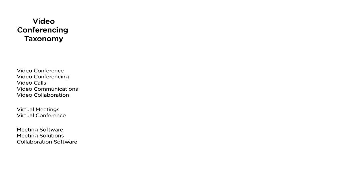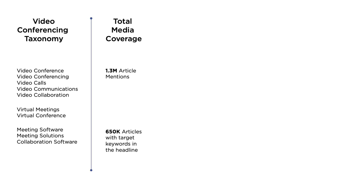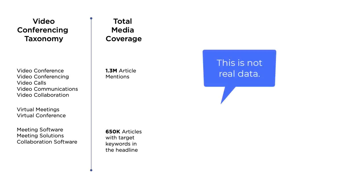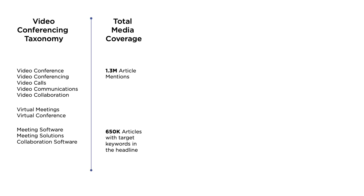I have two examples here. One where I'm pulling pure mentions — 1.3 million mentions of all of these keywords and phrases over the course of three months. Below that, I have 650,000 articles with target keywords in the headline — what I would call exclusive coverage. But this is coverage about the category of video conferencing, not your business specifically. This is your entire data set, so it's important that your taxonomies and keywords are bulletproof. You need to defend this data, so make sure you're gathering every piece of coverage possible about this topic.